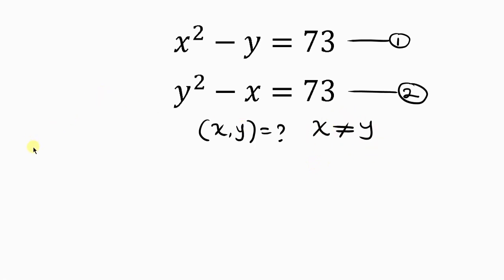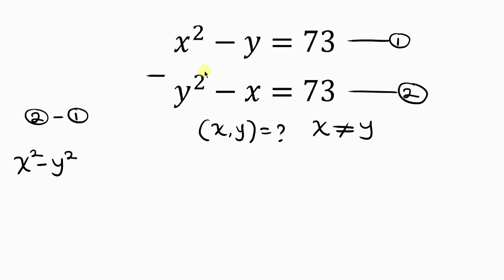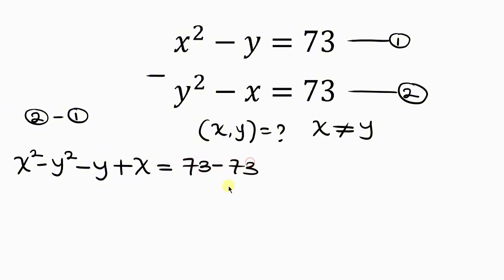Our first step will be to subtract equation 2 from equation 1. So we get x squared minus y squared, and then minus y minus times minus gives plus x, and this is equal to 73 minus 73.